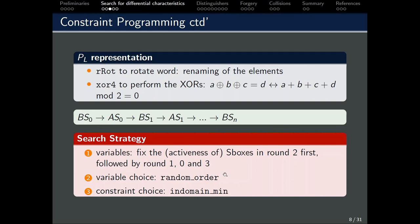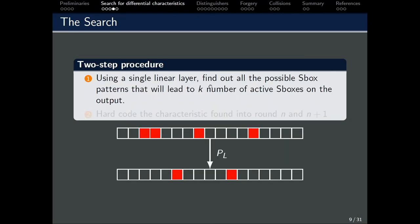For the constraint choice, we set it to be in domain min. In this case, we are telling the program to search for the smallest value in the domain first. Since 1 represents an active S box and 0 represents an inactive S box, the solver will try to set it to be inactive first. To further restrict the space of the search, we have a two-step procedure. The first step is to just use a single linear layer of the ASCON permutation in CP and find out all the possible active positions of S boxes in a single round. We then restrict the number of active S boxes in the output to be exactly k. Next, we will hard-code this characteristic found in round 1 and 2. Note that since we will have a lot of characteristics, we will have to run them all.